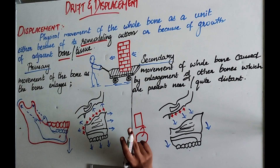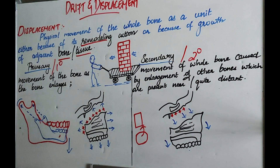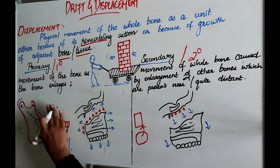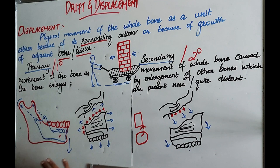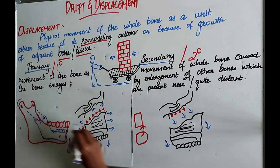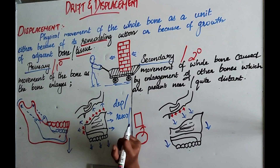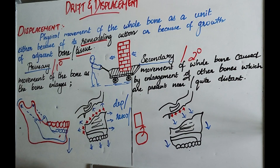We have two types of displacement: primary and secondary displacement. Primary displacement is the movement of the whole bone due to the growth of the bone itself. As the bone is growing, there will be movement of the bone — it is not depending on any other bone. The growth of the bone itself causes the movement of the bone. Movement can occur either in the direction of deposition or in the direction of resorption. We have two examples: mandible and maxilla, which show primary displacement.